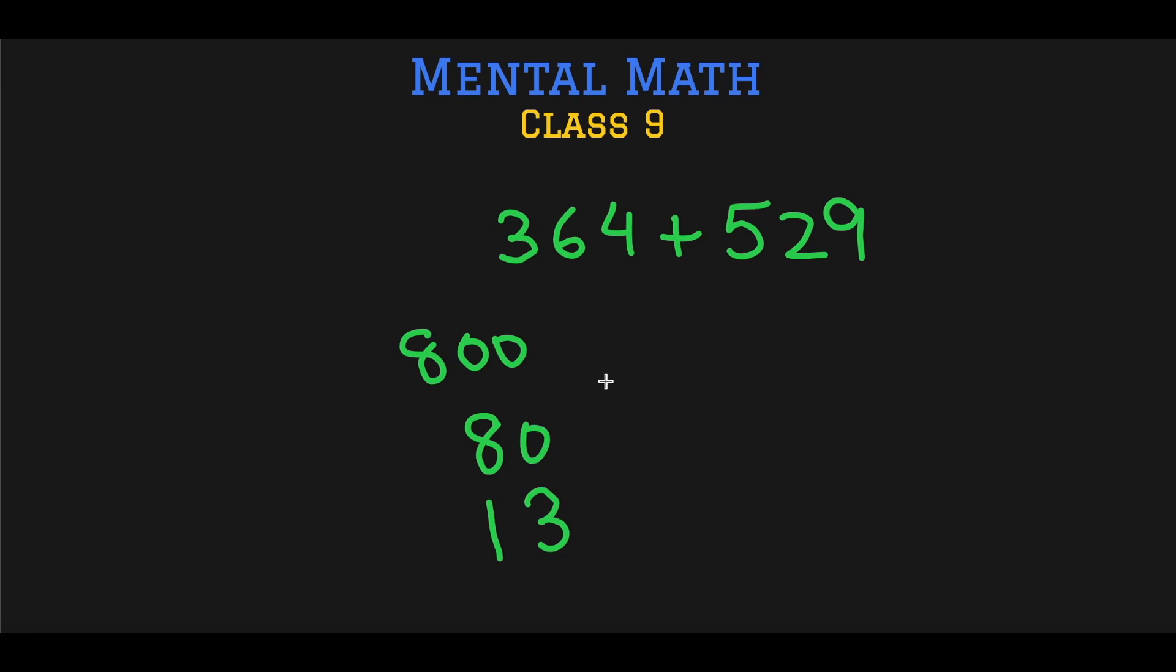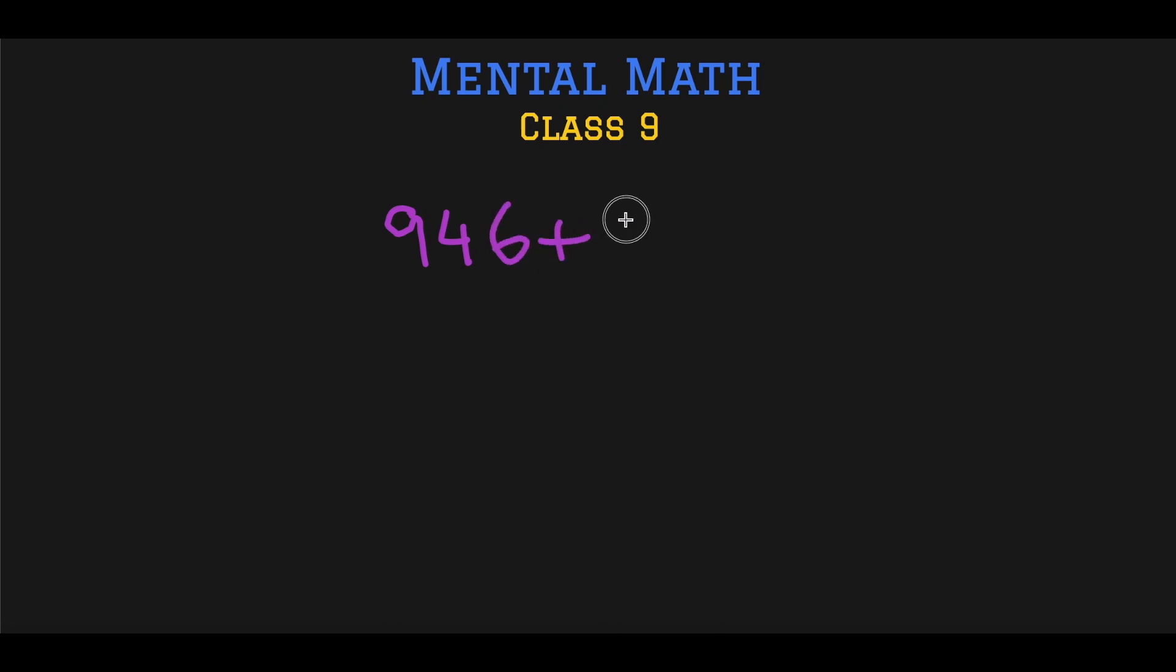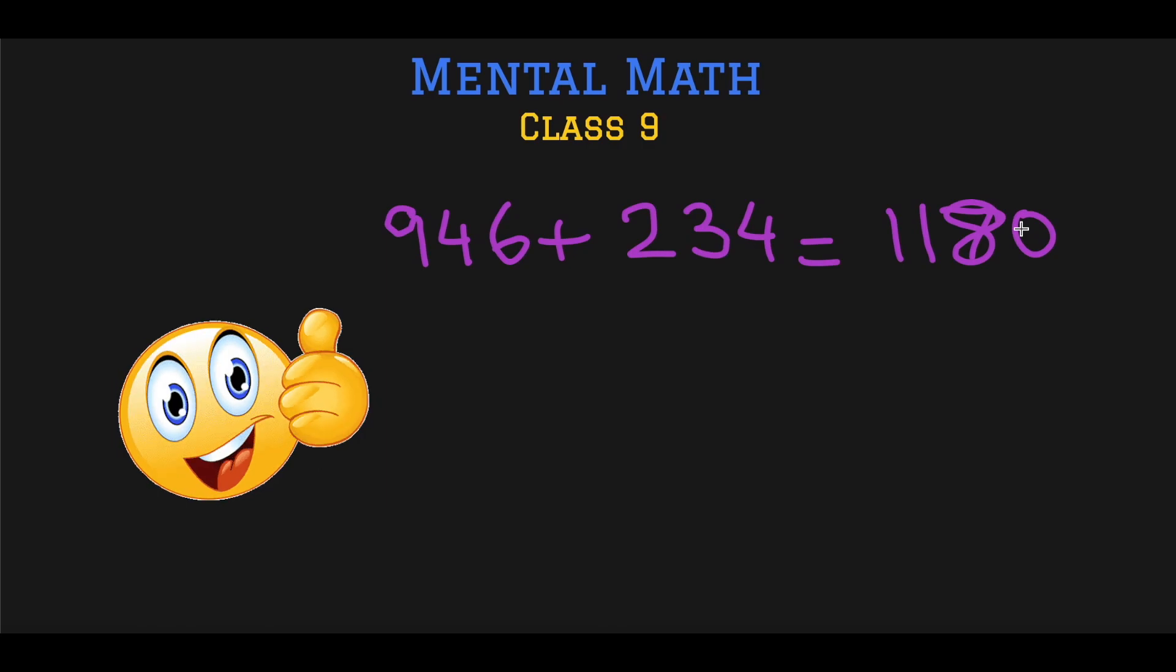So we have a question: 946 plus 234. Add the hundreds, we get 11 here. Add the tens, we get 7 here. And add the ones, we get a 10. So we have to convert this into an 8, and this is the final answer. Wasn't it fast?